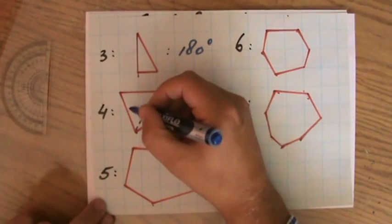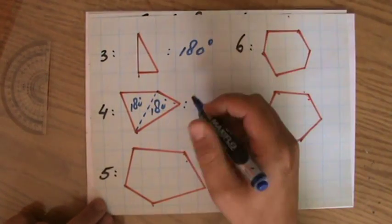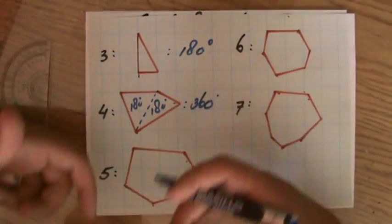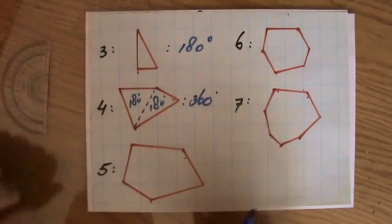So if one triangle is 180 degrees, then two of those triangles will be two times 180 degrees, which is 360 degrees. So any or every quadrilateral, the sum of the interior angles equals 360 degrees.